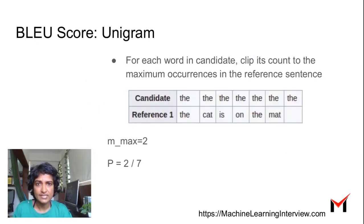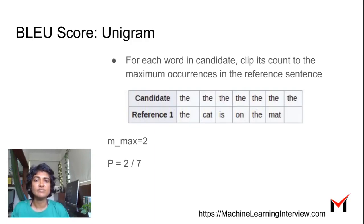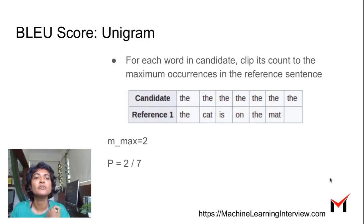One way to fix this is to consider only the number of word repetitions in the candidate that make sense from the point of view of the reference. In this case, 'the' occurs only two times in the reference. So if it occurs more than two times in the candidate, we clip it to two occurrences. We clip the occurrence of each word to the maximum number of occurrences of that word in the reference. Since 'the' appears seven times in the candidate, we clip it to two times. Now the BLEU score would be two divided by seven, clearly indicating a bad match.